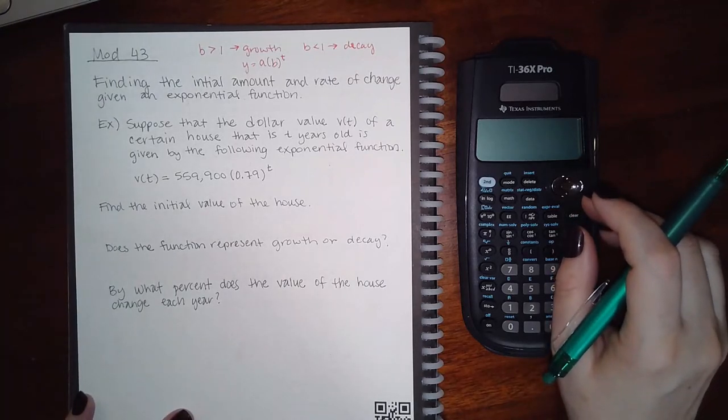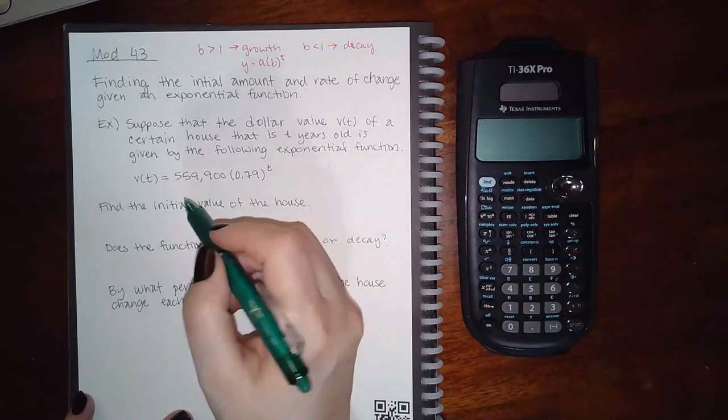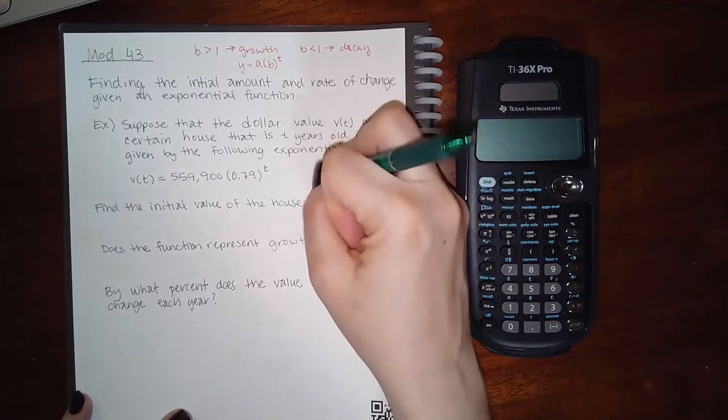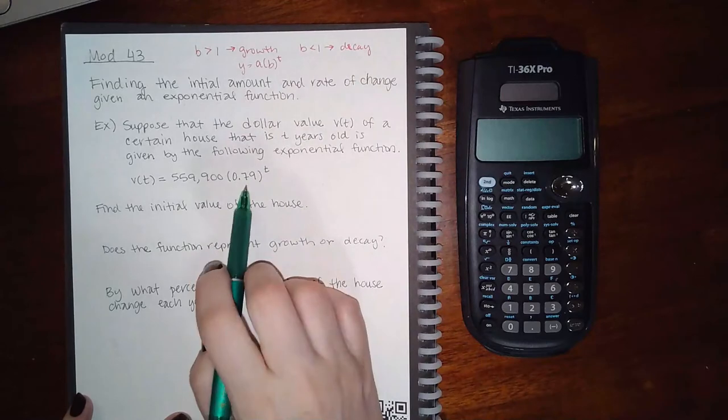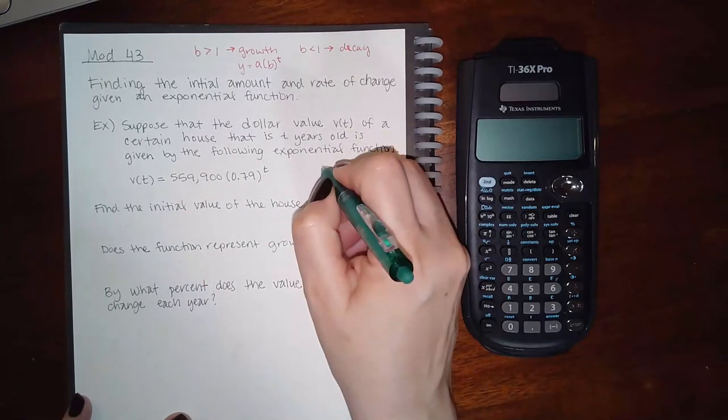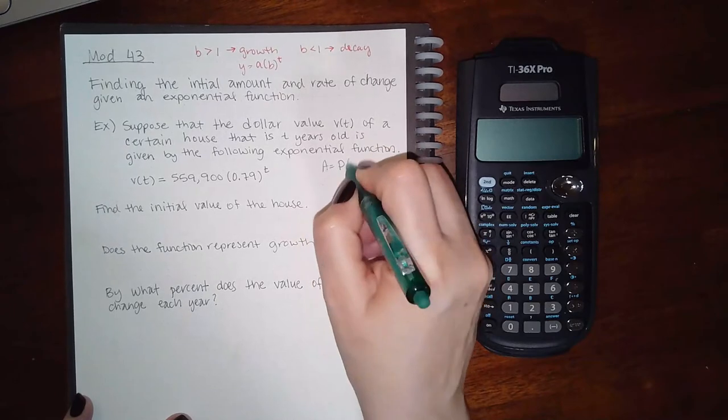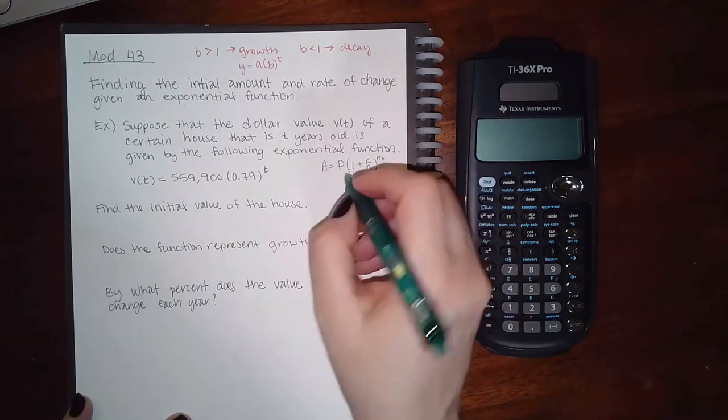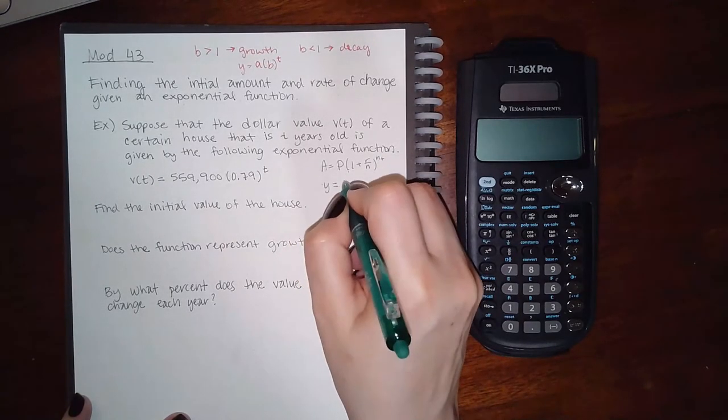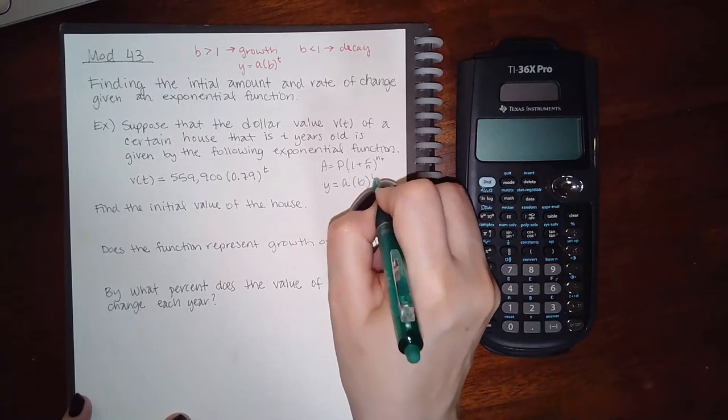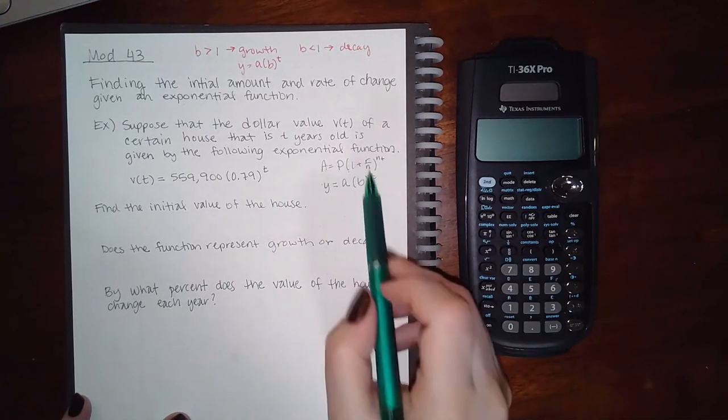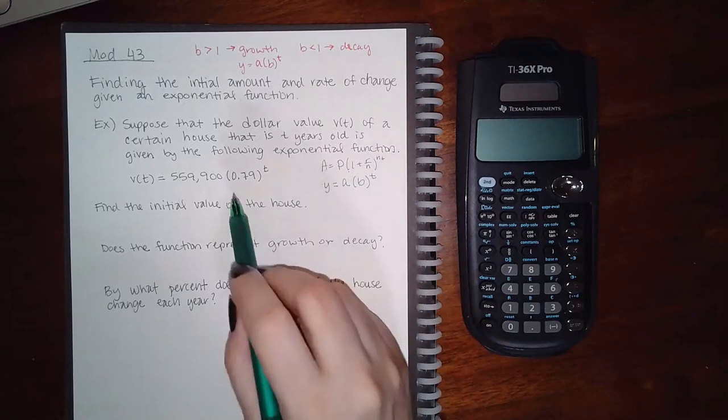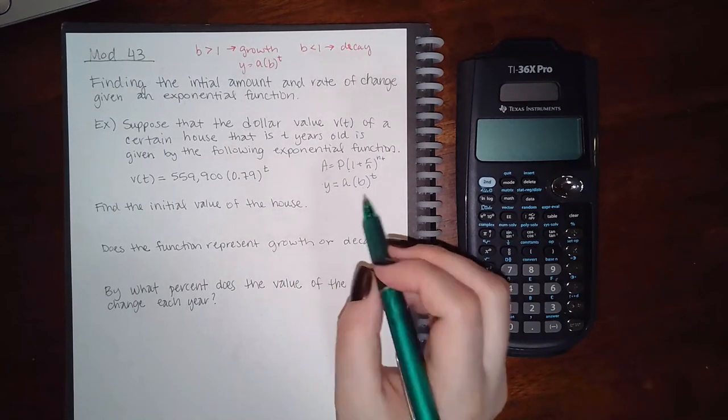So the initial value is going to be, remember what the equation looks like: it's an exponential, right? So it's A = P(1 + r/n)^(nt), or you can just say y = a times some number to the power t. Once you know what all these values are, that's going to give you a number. There's no n because it looks like it's continuous—no, not necessarily; continuous would have the e in it.